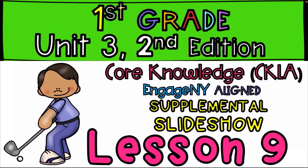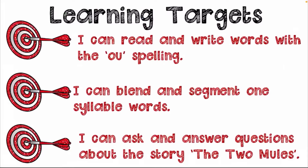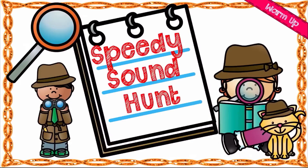Hello, my champions! Welcome to yet another amazing class. Today our learning targets are: I can read and write words with the 'ow' (ou) spelling; I can blend and segment one-syllable words; and I can ask and answer questions about key details in the story. The two moles — speedy sound hunt, speedy sound hunt.